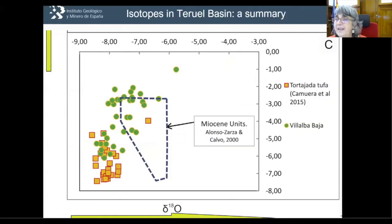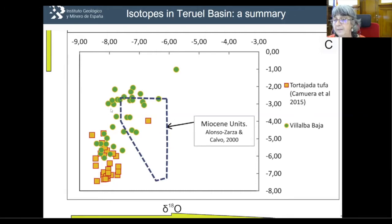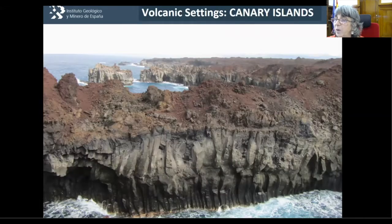Looking at the isotopes for the different sedimentary phases in the Teruel Basin, they are really good neighbors — the isotopes are very similar in the Miocene units, lake, palustrine, and calcrete. These are the diagenetic travertines and these are the tufas. We can distinguish the different sedimentary carbonates because of the isotopes, but they have very similar meteoric imprints in their values.